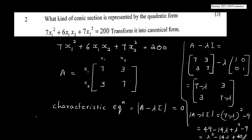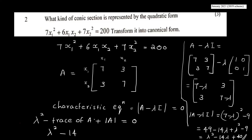For a second-order matrix, we use the equation λ² − (trace of A)·λ + determinant of A = 0. The trace is 7 + 7 = 14, and the determinant is 7×7 − 3×3 = 49 − 9 = 40. So the characteristic equation is λ² − 14λ + 40 = 0.